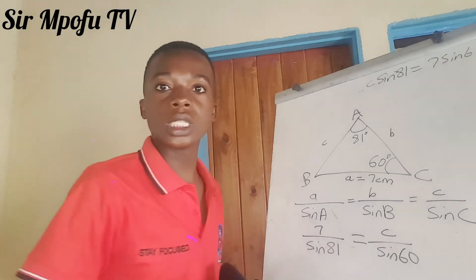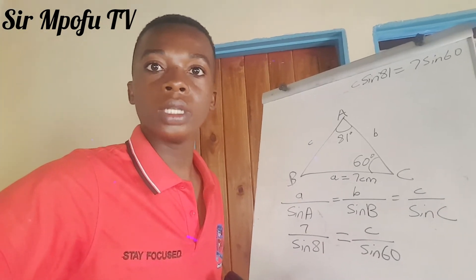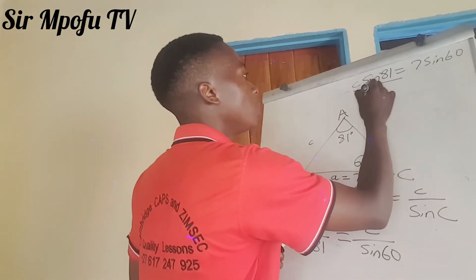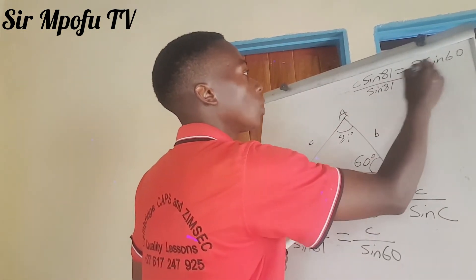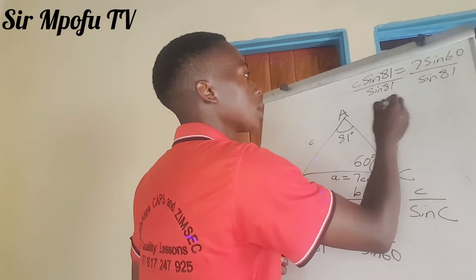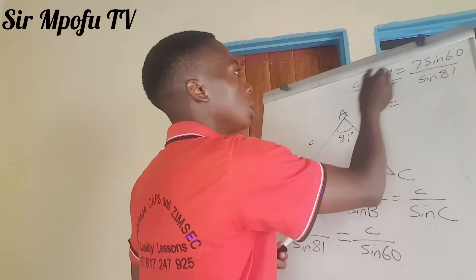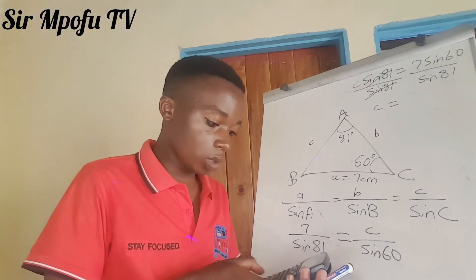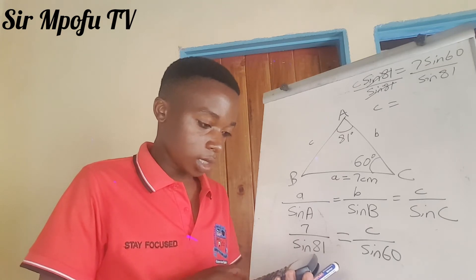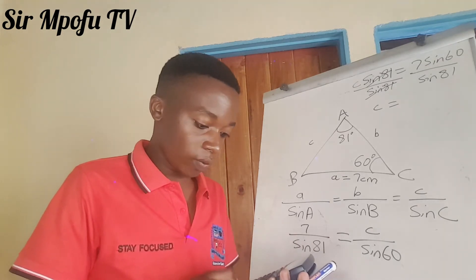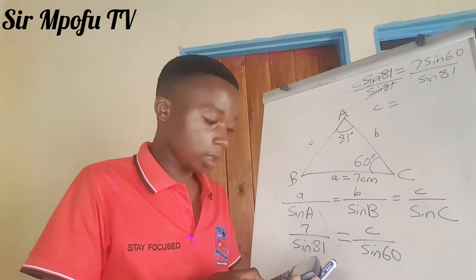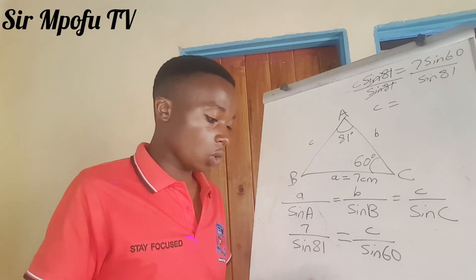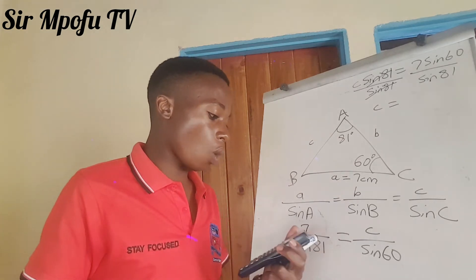Our angle C is 60 degrees. Then we are going to divide both sides by sine 81. So C equals 7 times sine 60, divided by sine 81. Let's calculate that: 7 times sine 60, divided by sine 81. Our answer is going to be equal to 6.14.